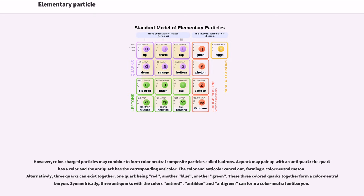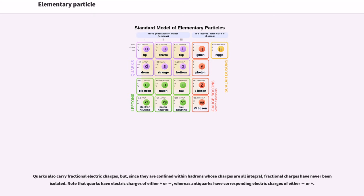Alternatively, three quarks can exist together, one quark being red, another blue, another green. These three colored quarks together form a color neutral baryon. Symmetrically, three antiquarks with the colors anti-red, anti-blue and anti-green can form a color neutral antibaryon.